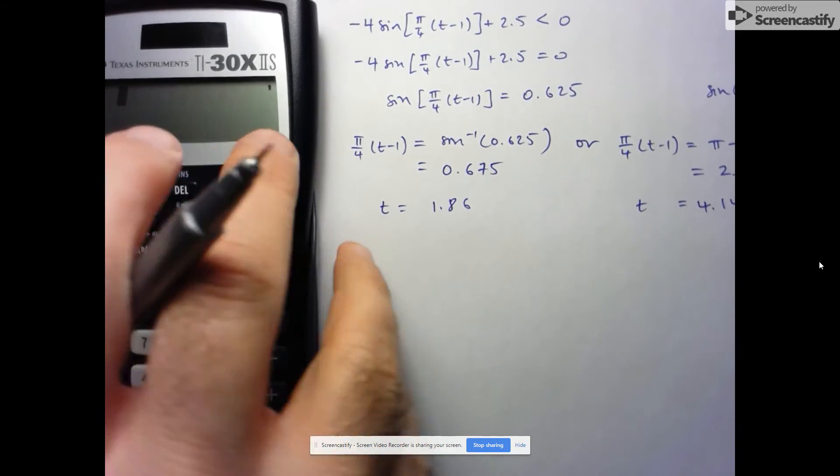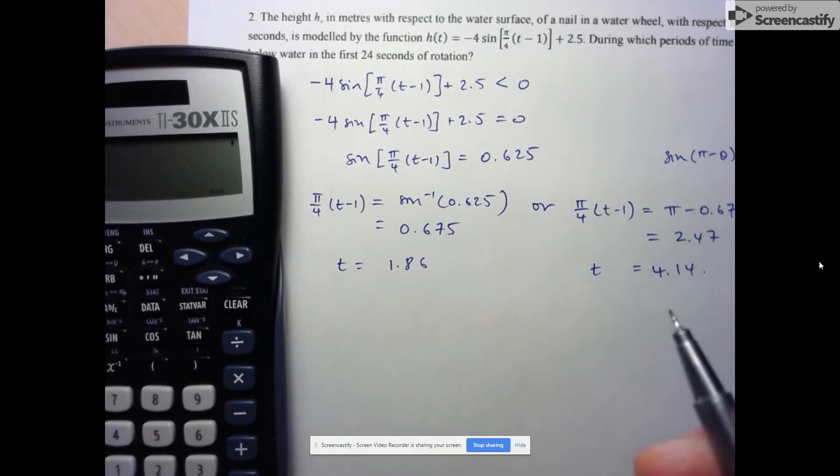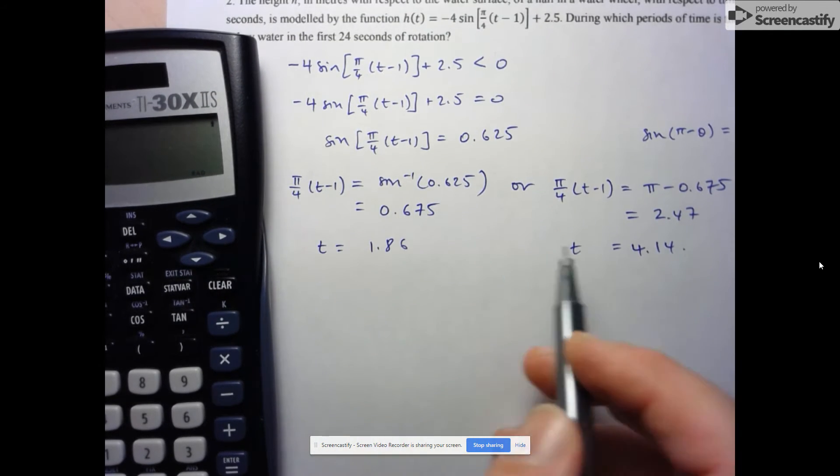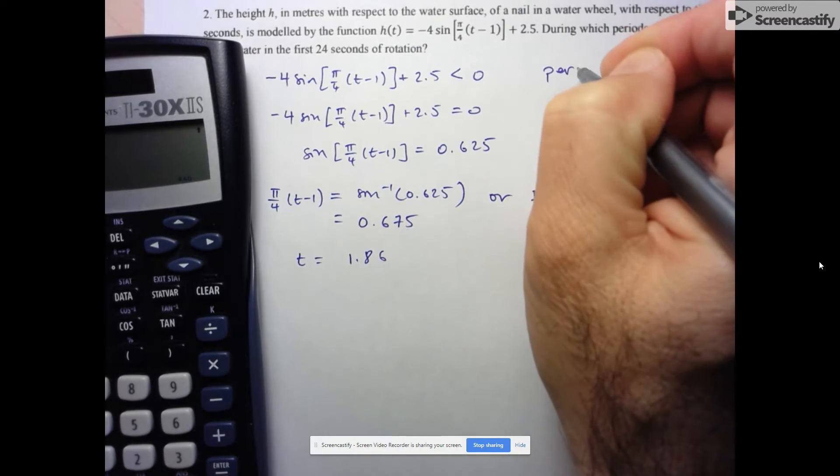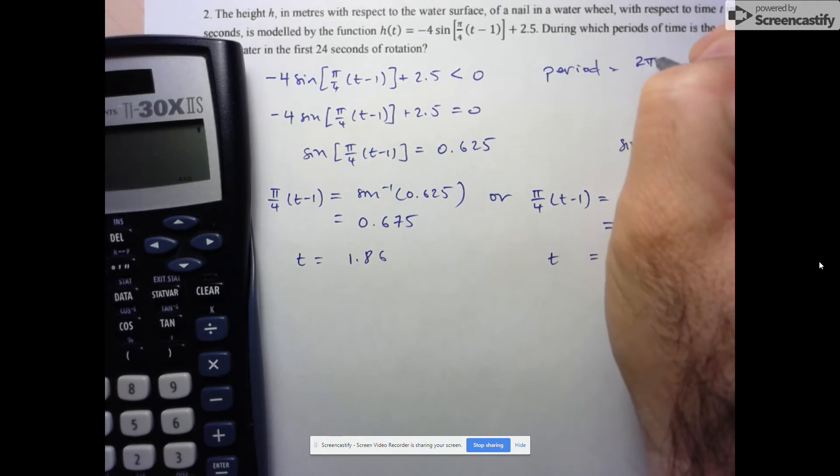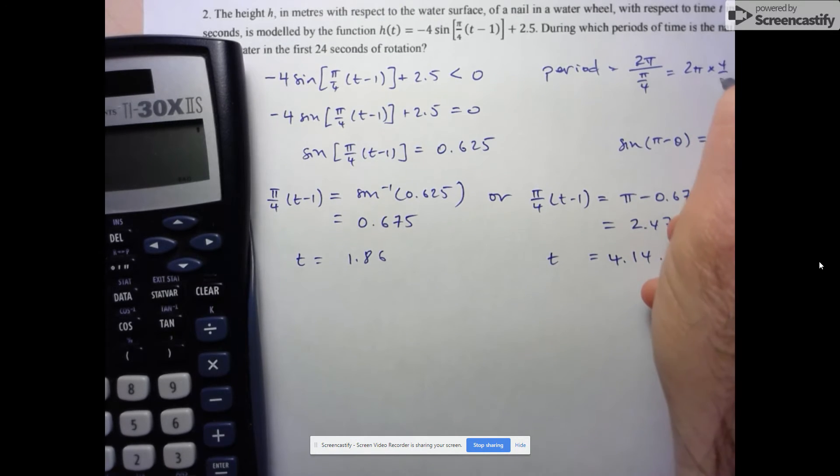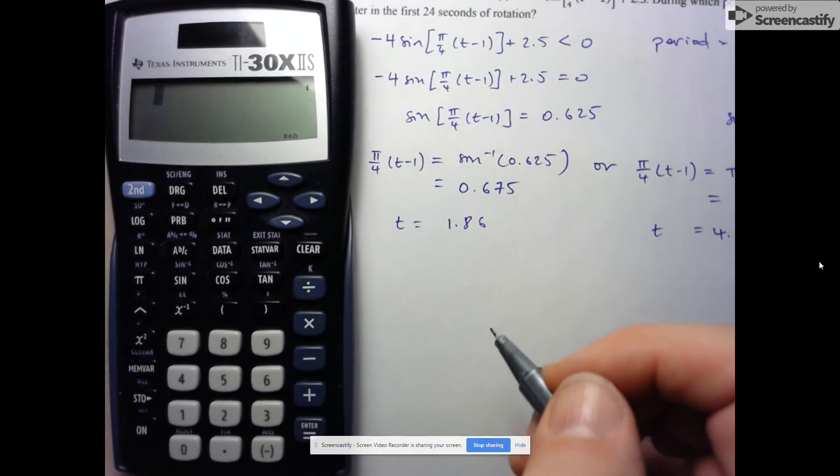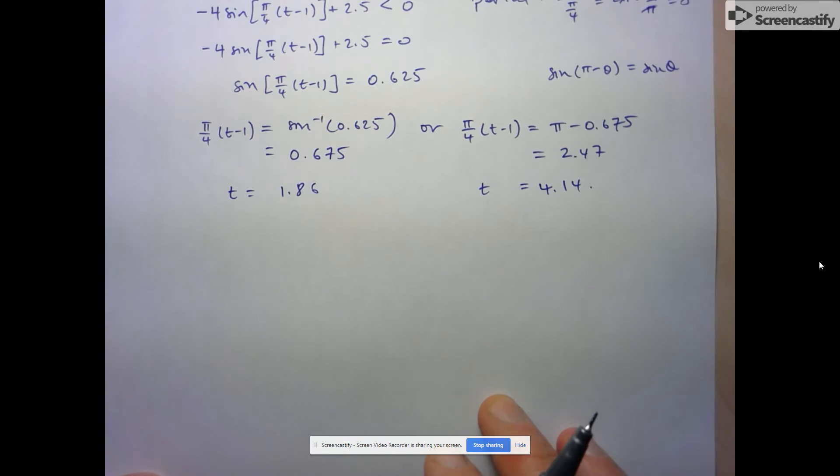So this gives us two times at which the nail is at water level. But of course, we're going up to 24 seconds, so we have to keep finding these until we reach 24 seconds. We know that these are going to repeat themselves for every period. So the period is given by 2 pi over the k value, and the k value here is pi over 4. So that's just 2 pi times 4 over pi, which gives us 8.